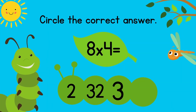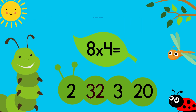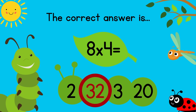Circle the correct answer. 8 times 4 equals? The correct answer is 32. Excellent!